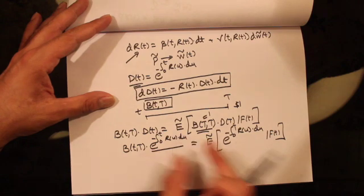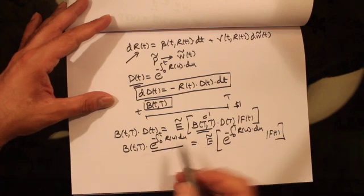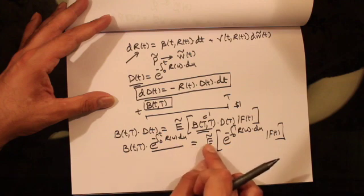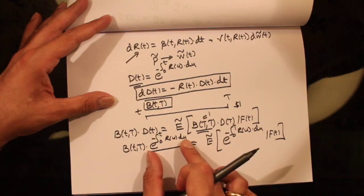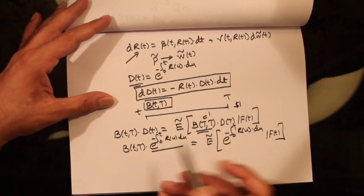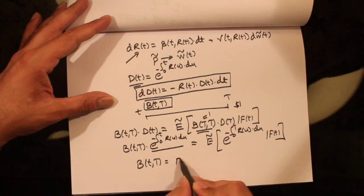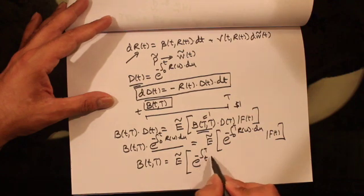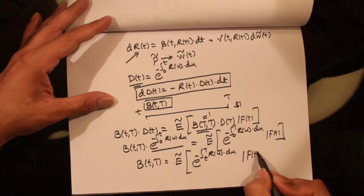The integral from 0 to small t is known at time ℱ_t, so we can take that quantity to the right-hand side and bring it inside the expectation. We then get that B(t,T) equals the expected value under the risk neutral measure of e to the power of minus the integral from t to T of r(u)du, given information at time t. That is the formula for a zero coupon bond.